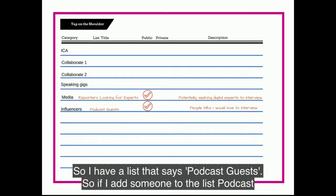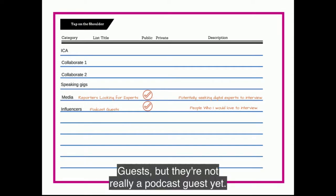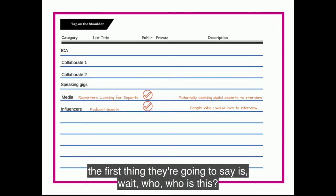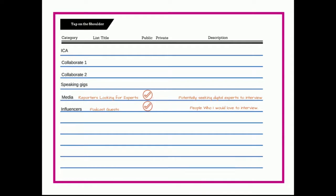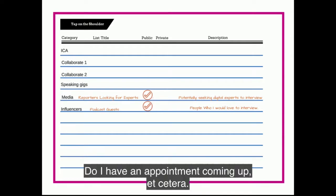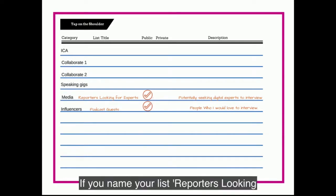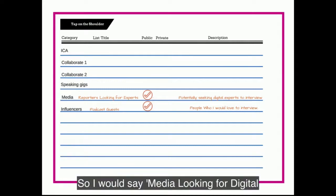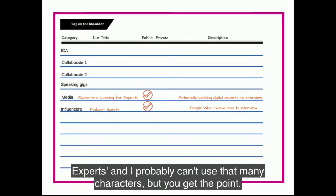I have a list called 'podcast guests.' If I add someone to that list and they're not really a podcast guest yet, they're going to be curious — the first thing they'll say is, 'Wait, do I have an appointment coming up?' If you name your list 'reporters looking for experts,' and nail down what that means for you — so I would say 'media looking for digital experts' — that's another great approach.